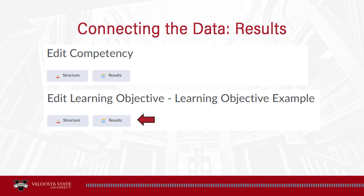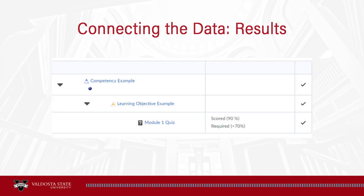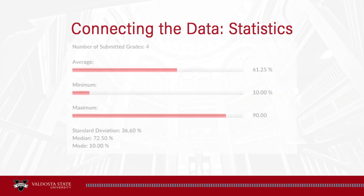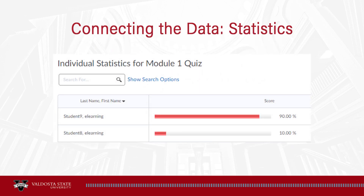To view the results of your competencies and objectives, click the Results button on the page for that item. Once students have met the threshold to meet the competency or objective, you'll see a check mark. You can click the student's name to see more details about how the student is progressing on competencies, objectives, and activities. To view overall statistics for an activity, go to the Structure Summary tab for the competency or objective and click the name of the activity. Scroll down the page to see basic statistics, grade distribution, and individual statistics for the activity.